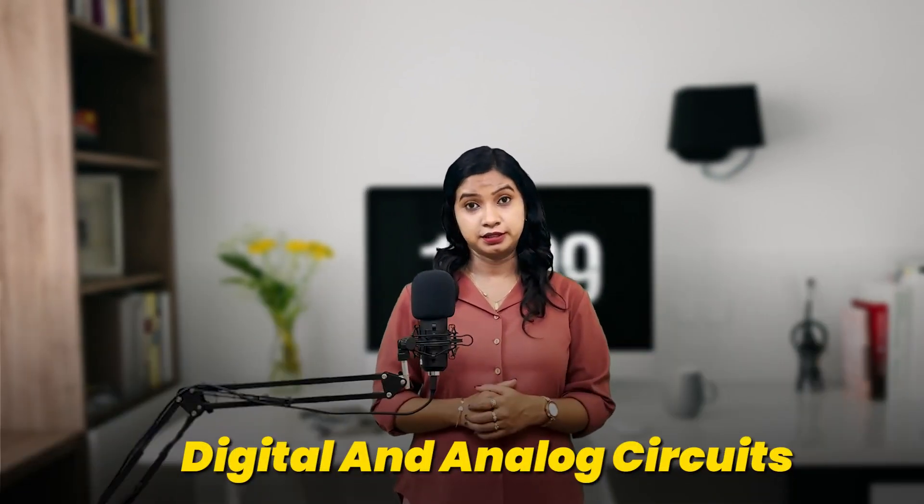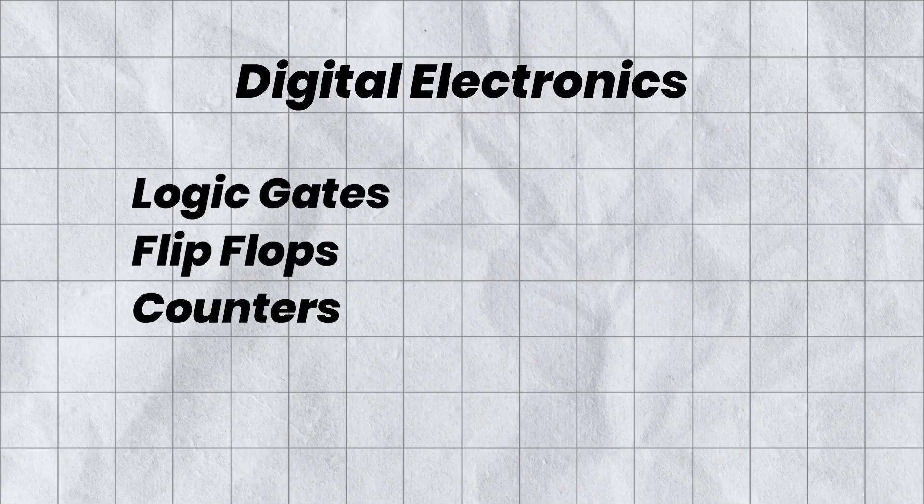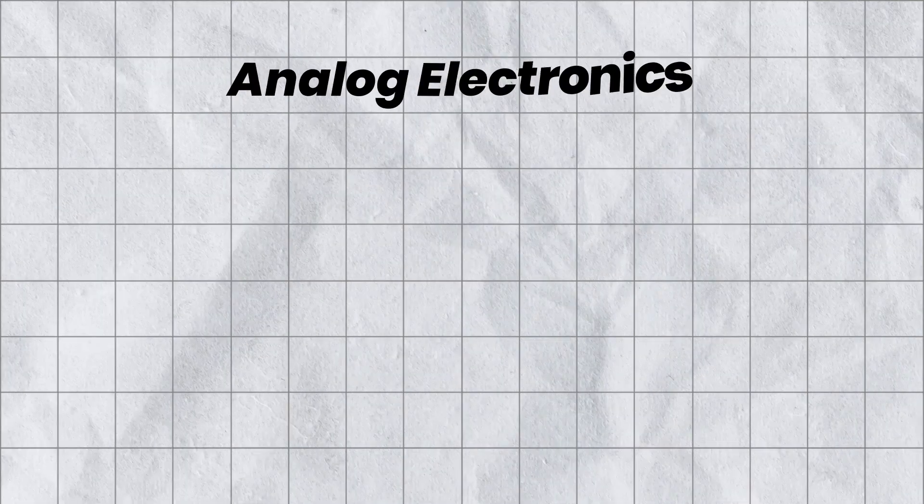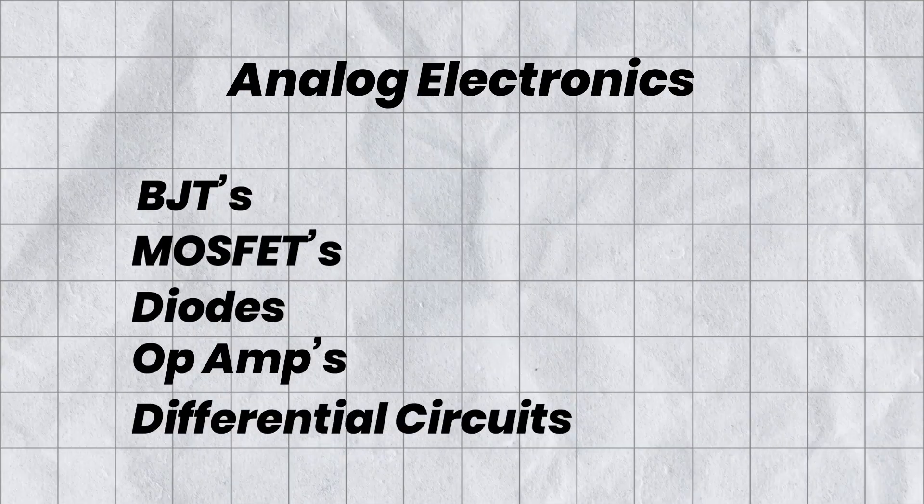Next is digital and analog circuits. As I've mentioned in multiple videos, if you are willing to make your career in core VLSI, then start studying digital electronics and analog electronics in detail. These subjects are a must — you must have good command on them. Digital electronics covers logic gates, flip-flops, counters, sequential circuits, and all. Analog electronics covers BJTs, MOSFETs, diodes, op-amps, and differential circuits. Next subject is semiconductor devices. Since you are planning to design layouts in VLSI physical design, it is very important to have good fundamentals on devices — how a MOSFET works, what is CMOS technology, and how the fabrication process is done.